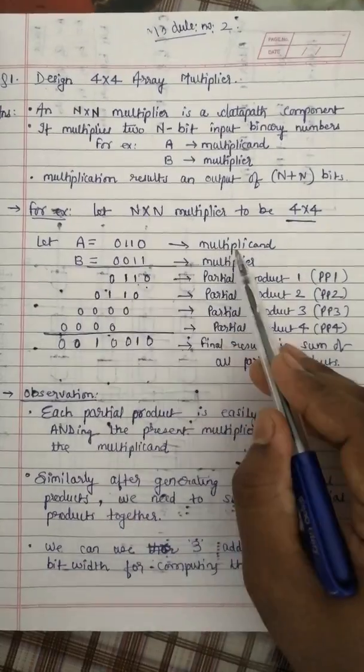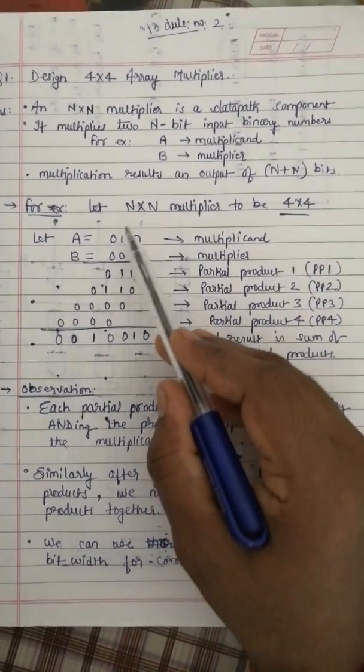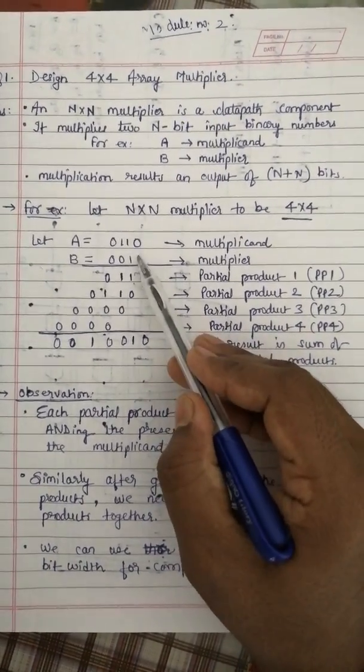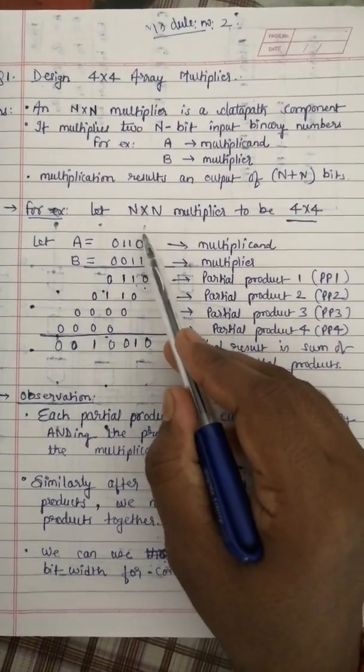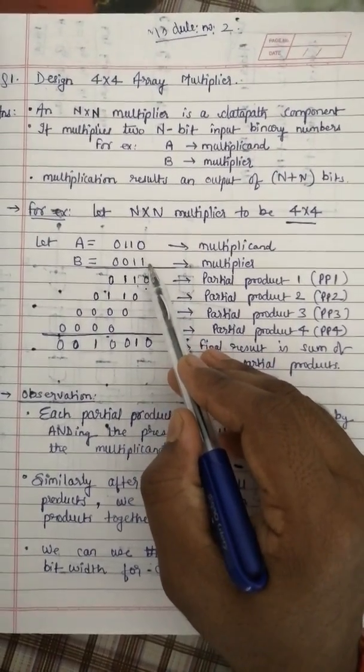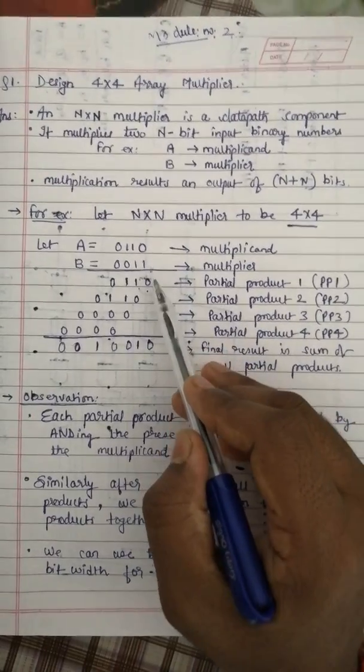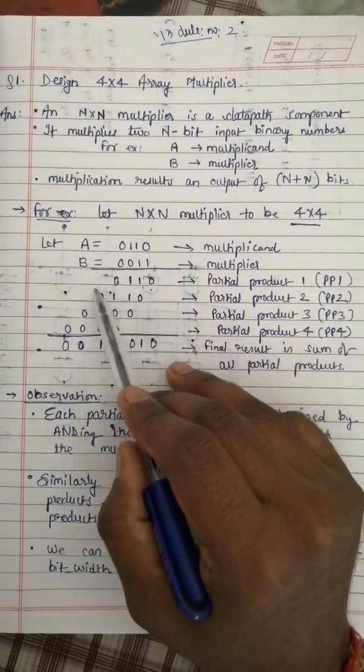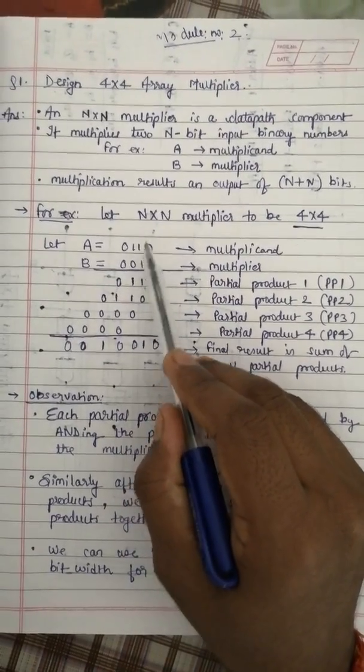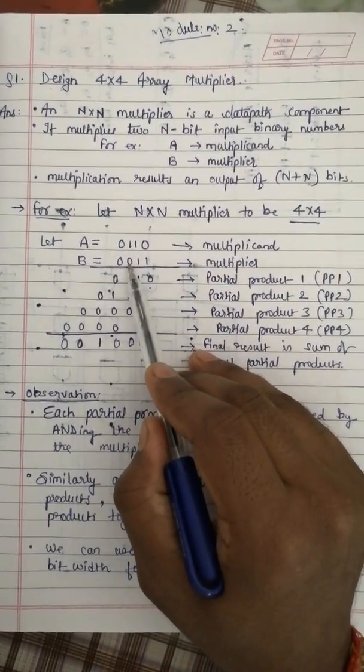And B is called the multiplier. Now as we know very well how to multiply these two binary numbers, the method is to multiply the whole multiplicand bit by bit. First, multiply the multiplicand with the first bit, then with the next bit, and so on.